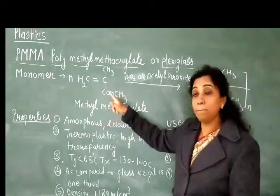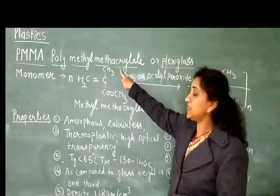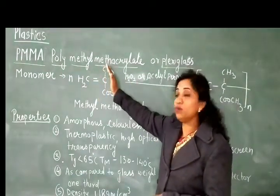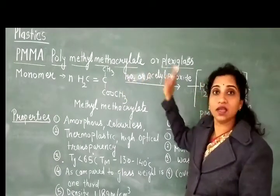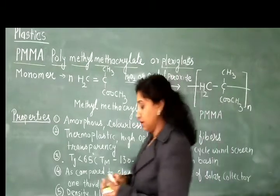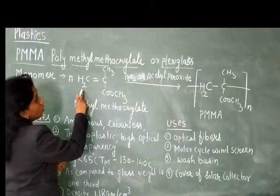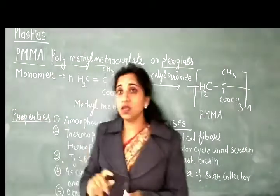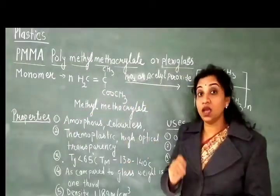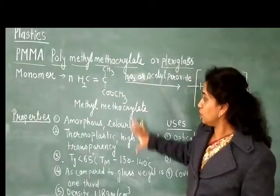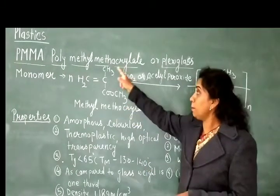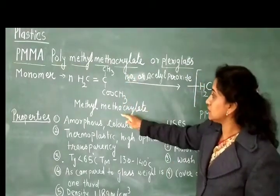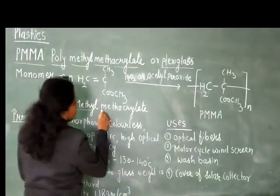The monomer of PMMA is methyl methacrylate. The structure of methyl methacrylate is CH2 double bond C, with CH3 and COO-CH3 groups. This is methyl methacrylate.